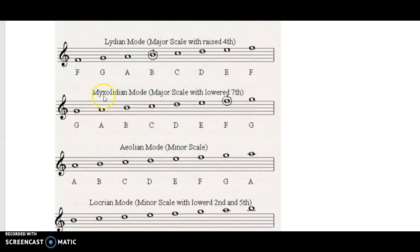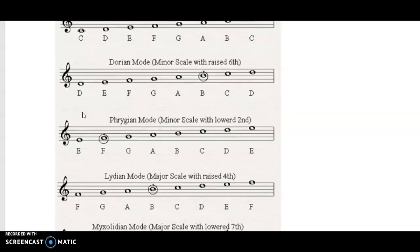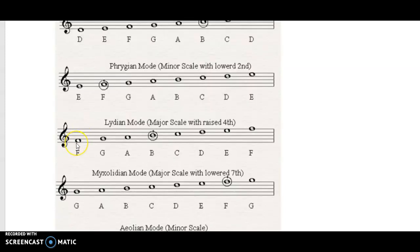The Lydian mode starts on the 4th note: F, G, A, B, C — there the half tone is between degrees 4 and 5, and then E, F gives me a half tone between 7 and 8. So they take exactly the same notes and start on a different note every time. Dorian started on the 2nd note (D); Phrygian on the 3rd note; Lydian on the 4th note.